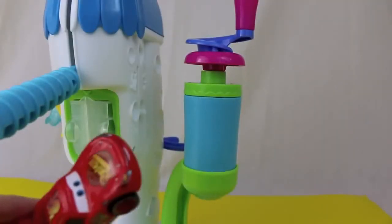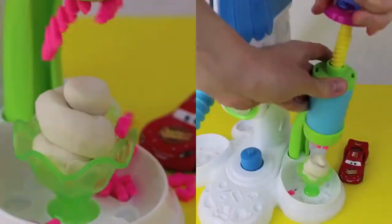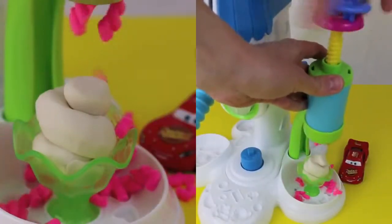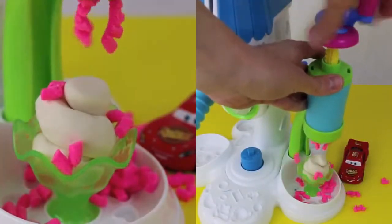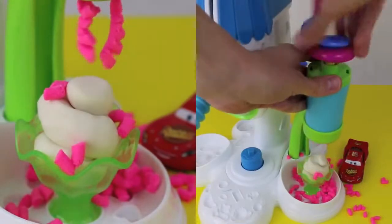Now Lightning, it's time to make some sprinkles for your ice cream. All you need to do is load it up with Play-Doh Plus, place your ice cream underneath, and twist.